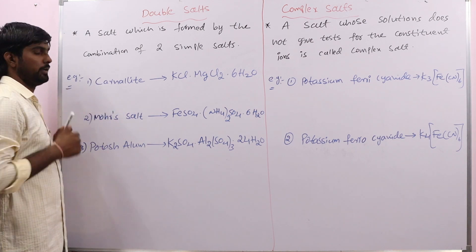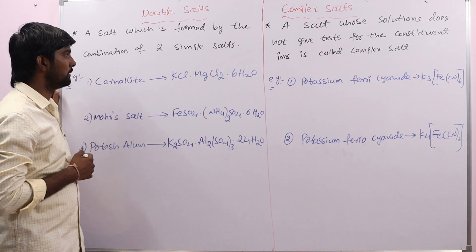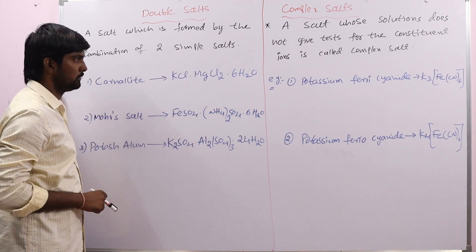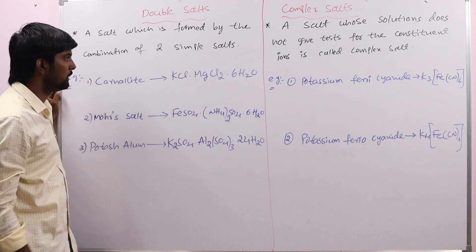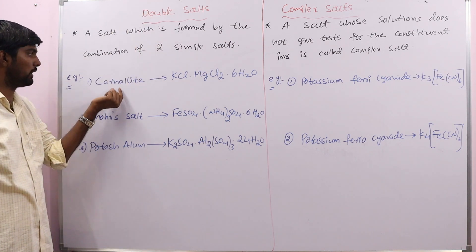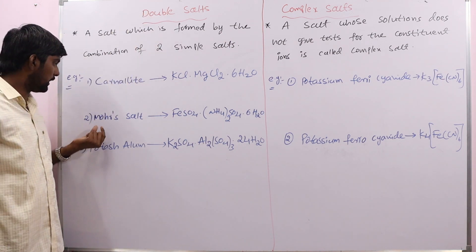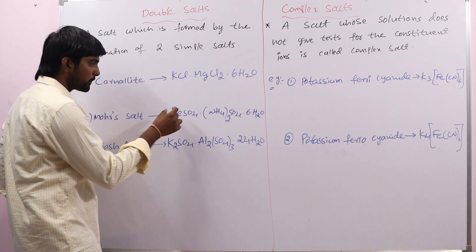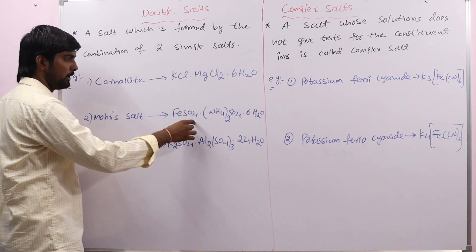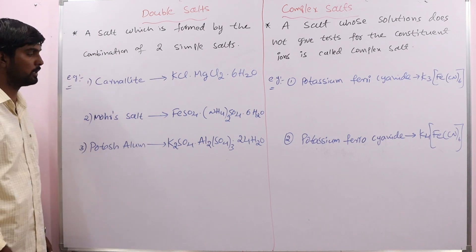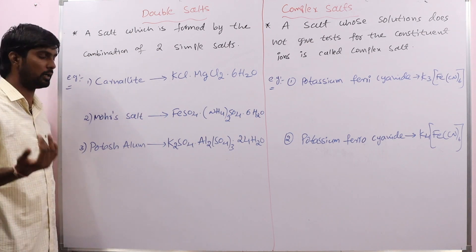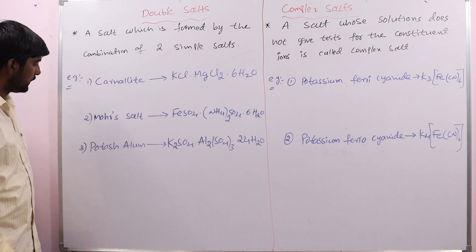For example, carnallite is a double salt. It is formed by the combination of KCl and MgCl₂ — one simple salt combined with another simple salt to form a double salt called carnallite. Another example is Mohr's salt, which is formed by the combination of ferrous sulfate and ammonium sulfate. Ferrous sulfate is one simple salt, ammonium sulfate is another, and the salt formed by these two is a double salt called Mohr's salt.